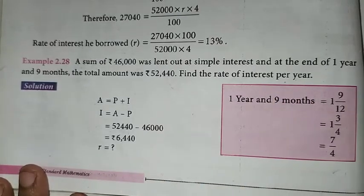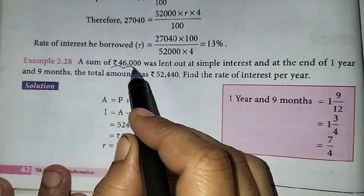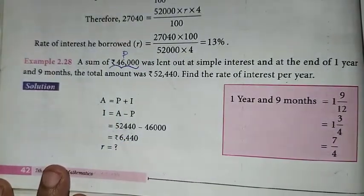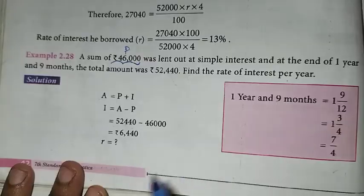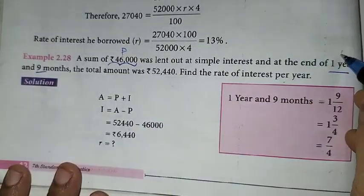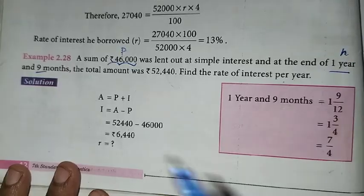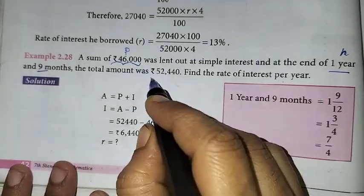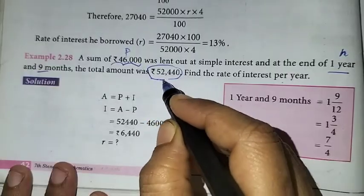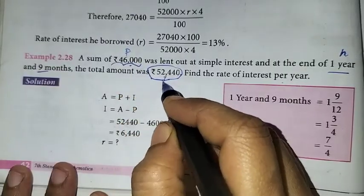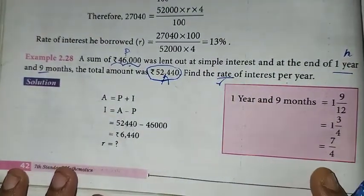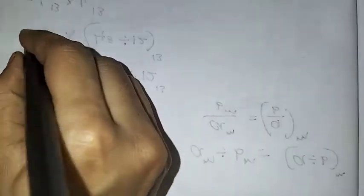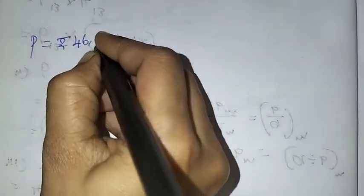First, what are the given values? The principal is rupees 46,000, lent out at simple interest. At the end of 1 year and 9 months, the total amount was 52,440. We need to find the rate of interest.